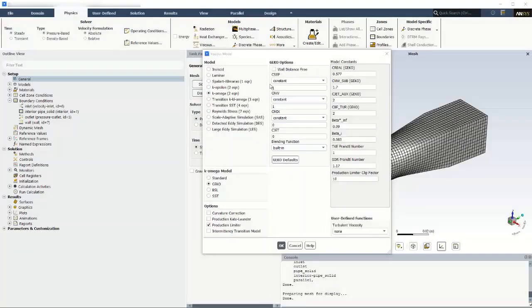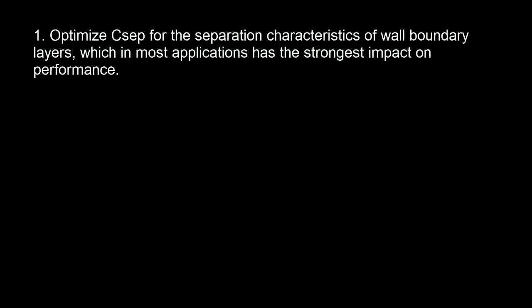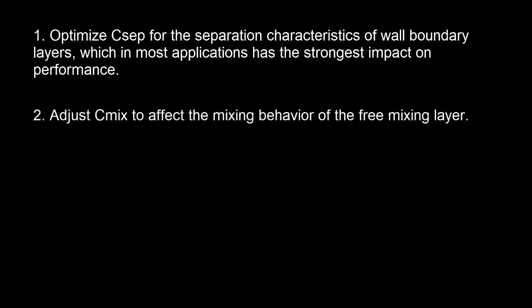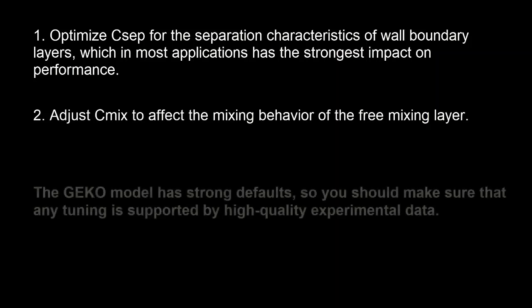For the majority of cases, you only need to tune CSEP and CMix for the following. First, optimize CSEP for the separation characteristics of wall boundary layers, which in most applications has the strongest impact on performance. Then adjust CMix to affect the mixing behavior of the free mixing layer.